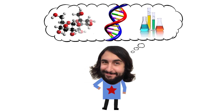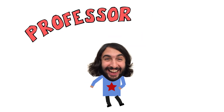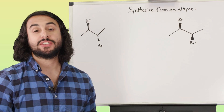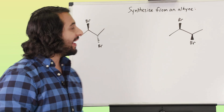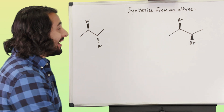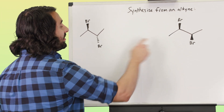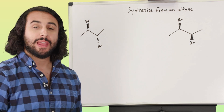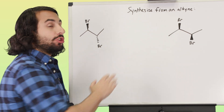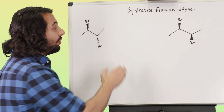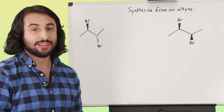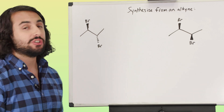Professor Dave Explains. Hey guys, for today's practice problem we have these two vicinal dihalides. We want to notice that they differ in their stereochemistry, and what we want to do is start from an alkyne and show the pathway to get to these two different vicinal dihalides. Think about the reactions you know that can do this kind of chemistry and give this a shot.